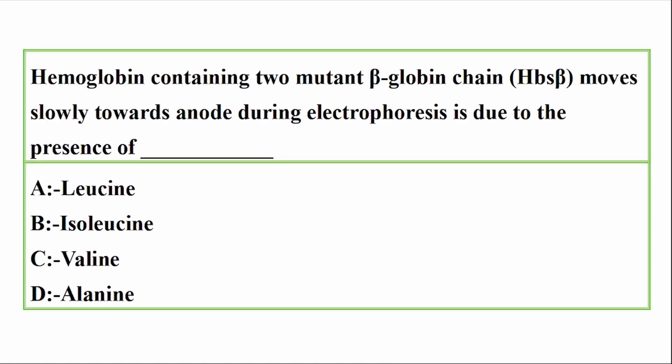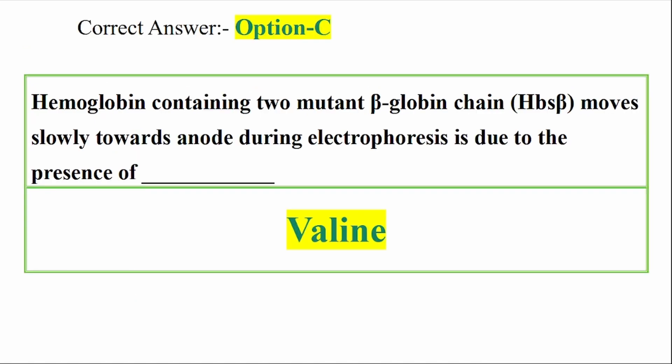Question: Hemoglobin containing 2 mutant beta-globin chains moves slowly towards the anode during electrophoresis. This is due to the presence of which amino acid? Options: Leucine, Isoleucine, Valine, Alanine. Correct answer: Option C — Valine. This is due to the presence of the amino acid Valine.